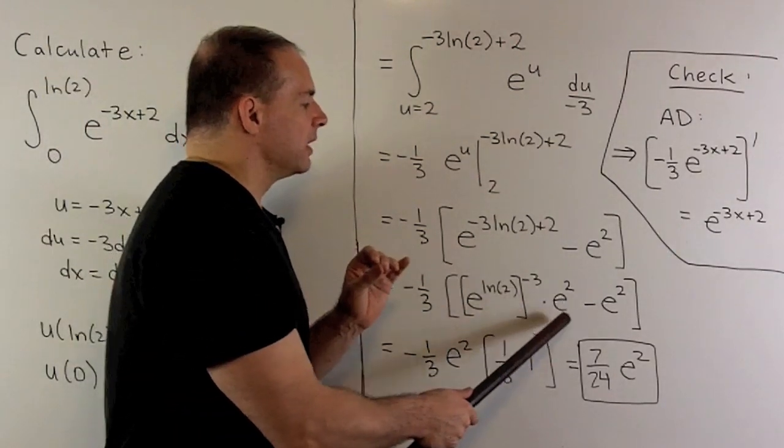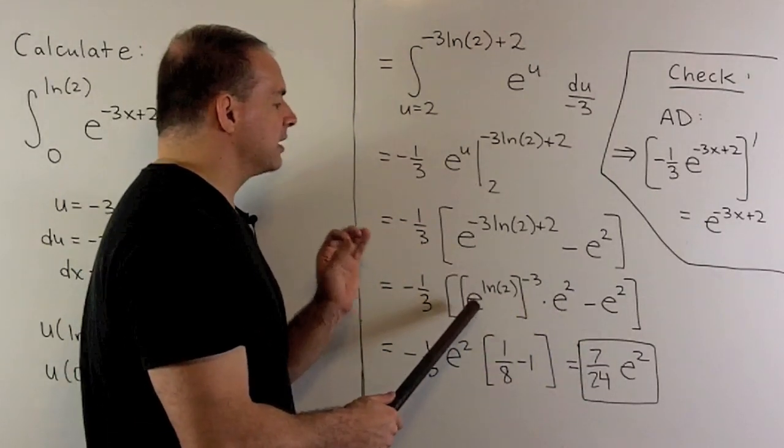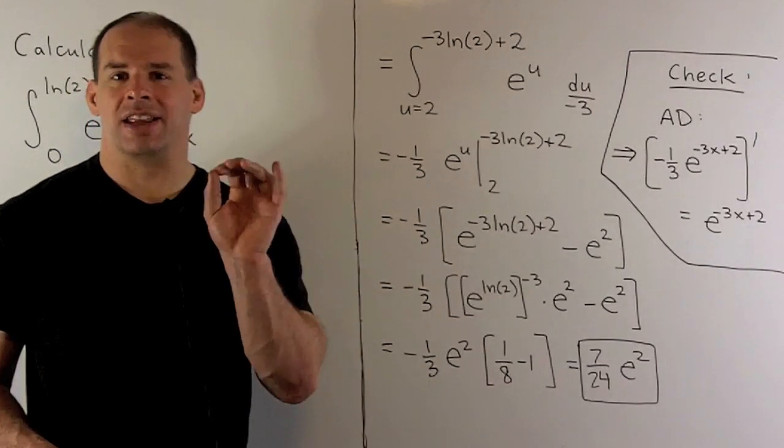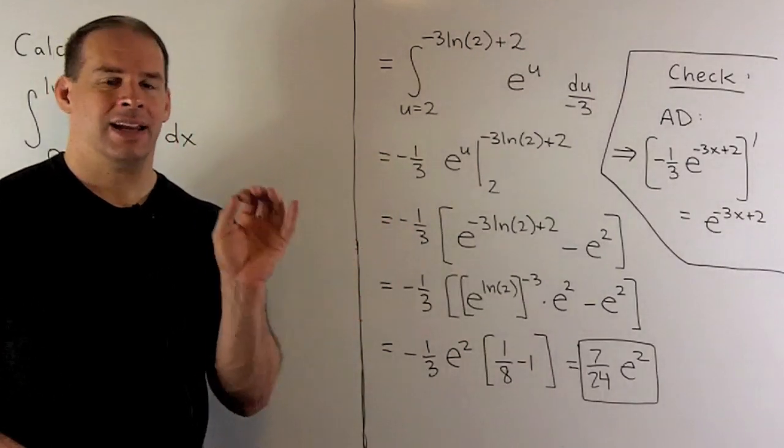So our next step will be to factor out an e squared. And I note, for the e to the minus 3 natural log of 2, I want to isolate e to the natural log of 2. Okay, so we'll put the minus 3 on the outside.